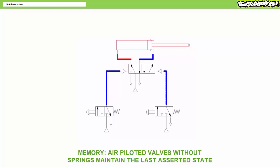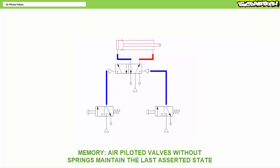When the air pilot on the right is asserted, the valve shifts to a position that retracts the cylinder. When an operator stops pressing push button two on the right, the spool remains in this position and the cylinder remains in retraction.